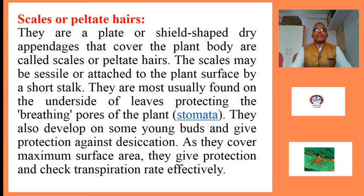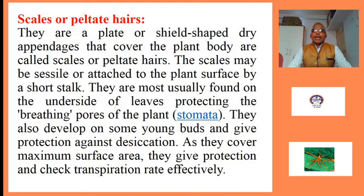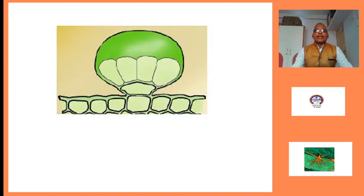Scales and peltate hairs: They are plate or shield-shaped dry appendages that cover the plant body, called scales or peltate hairs. These scales may be sessile or branched. They are most usually found on the underside of leaves, protecting the breathing pores of the plant called stomata. They are developed on some young buds and give protection against desiccation, as they cover maximum surface area. They give protection and check transpiration rate effectively. These are the scales arising on the epidermis.